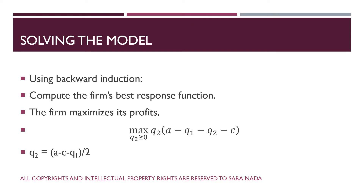How can we do this when we don't have a tree and each firm sets a quantity — meaning the actions are infinite? In order to solve using backward induction, as in previous economic applications related to oligopoly markets, we compute each firm's best response function. When solving using backward induction, we start from the end of the game — which means in this game, we start with firm 2, because the last action is chosen by firm 2.